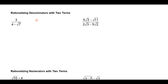Hi everyone. In this lesson we want to look at how we can rationalize denominators where there's two terms. If I look at this example where I have 3 divided by 4 minus the square root of 7, remember that we would like to get rid of this radical in the denominator, and perhaps the most obvious thing to do first would be to just multiply by the square root of 7 over the square root of 7, like we did when there was just one term.